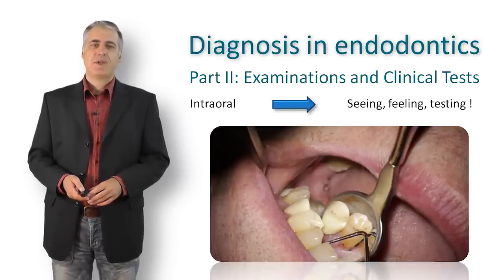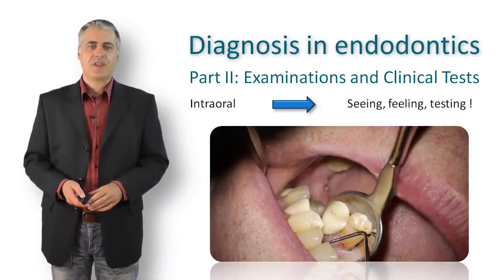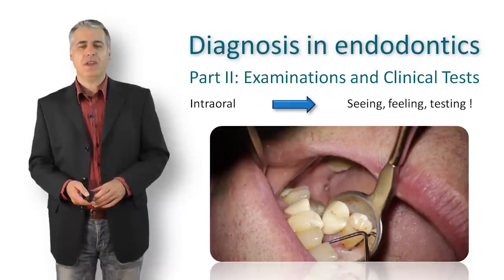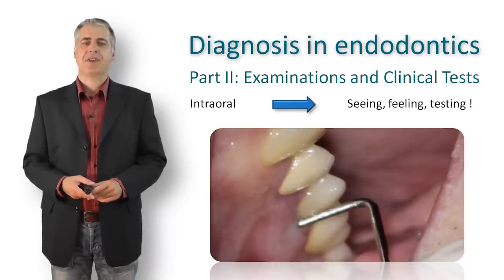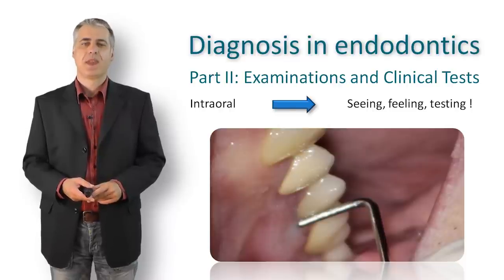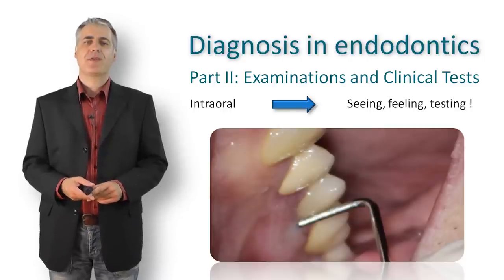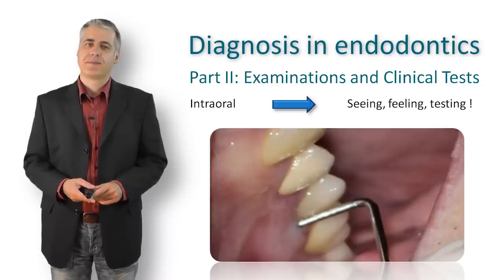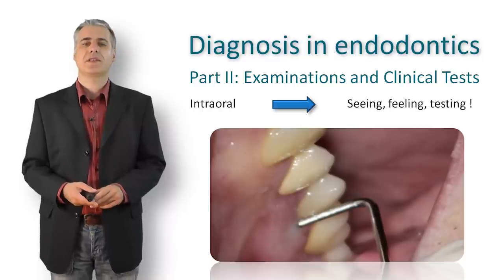A generalized increased pocket depth is typically a sign of periodontal disease, especially if accompanied with bleeding on probing, also known as BOP. A localized single pocket with increased depth could have several reasons: drainage of endodontic origin where a periapical infection drains through the gingival sulcus — especially on non-vital teeth — or a deep periodontal pocket without any correlation to an endodontic process.